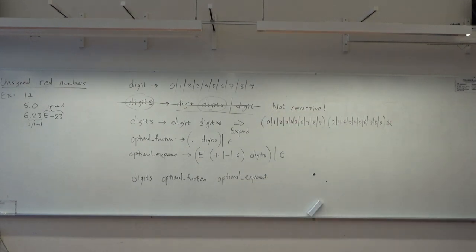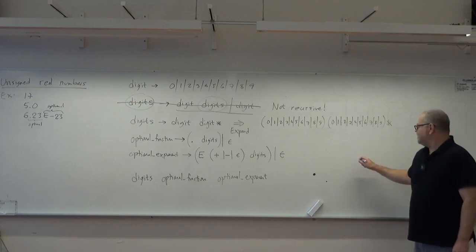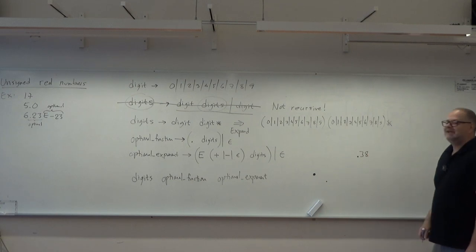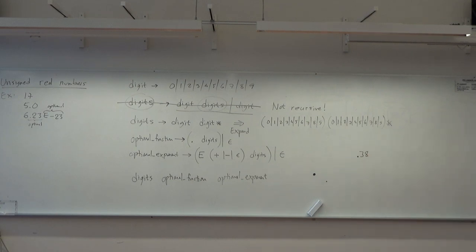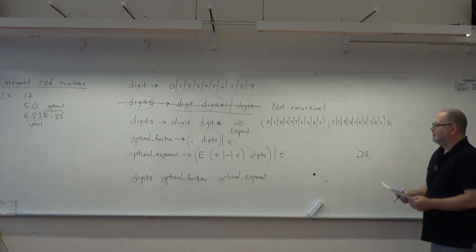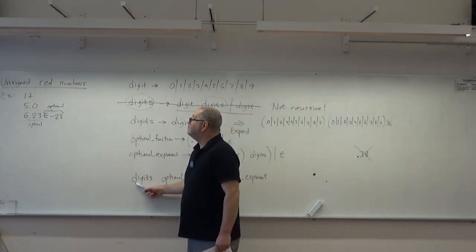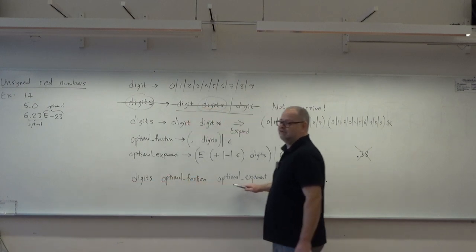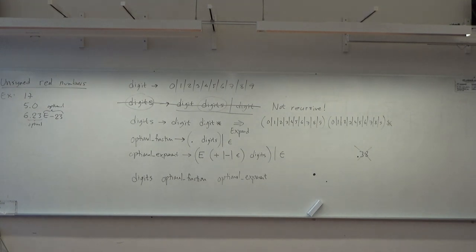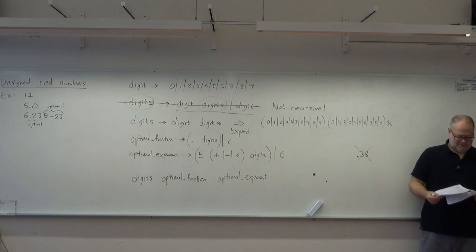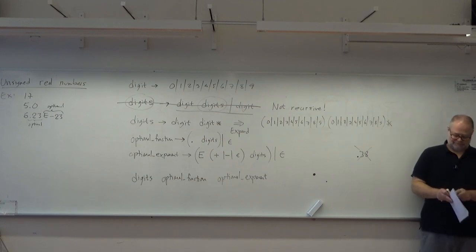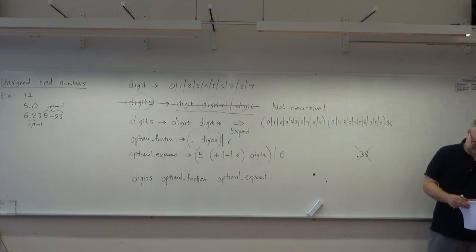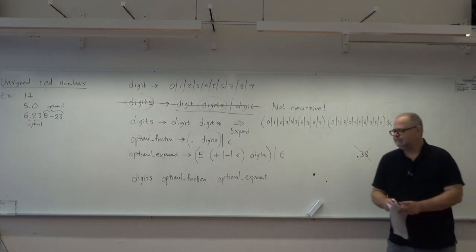Note that this does not allow the American way of writing decimal numbers without a leading zero. I could make the leading digits optional, but then you'd have three optional parts with no required component, and you'd allow empty real numbers. We don't want that.